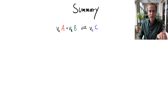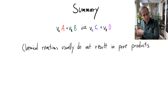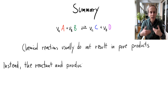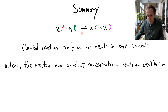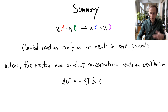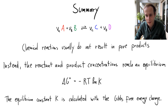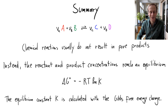Summary: In this knowledge clip (parts 3a and 3b) we learned that reactions don't proceed to pure products but reach equilibrium concentrations. At equilibrium, indicated by two arrows, you have certain concentrations of products and reactants, and the equilibrium constant K depends on the free energy of reaction, obtained from the free energies of formation. The equilibrium constant K is calculated using Gibbs free energies of formation. Thank you!